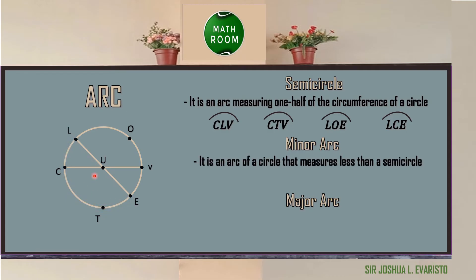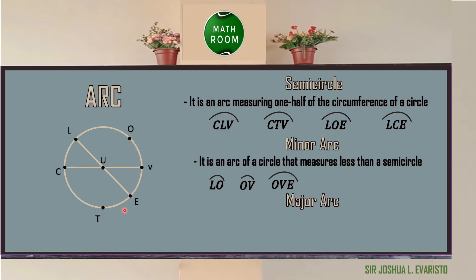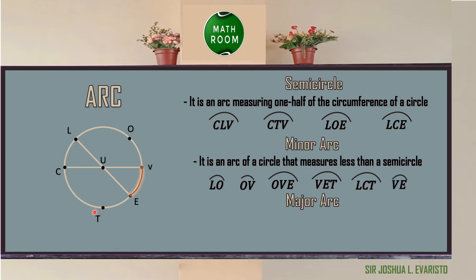A minor arc is an arc of a circle that measures less than a semicircle. Examples of a minor arc are arc LO, arc OV, arc OVE, arc VET, arc LCT, arc VE, and arc CT.